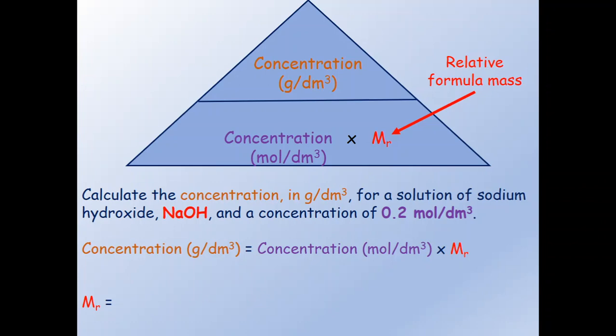To calculate Mr we have to add together the relative atomic masses of all the atoms in the formula. The relative atomic masses are given in the periodic table. So we add together the relative atomic mass for sodium, for oxygen, and for hydrogen. We get 23 for sodium plus 16 for oxygen plus 1 for hydrogen, and this equals 40. So Mr is 40.